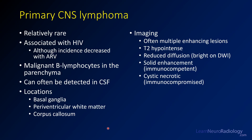This is a malignant B lymphocyte lymphoma that most often involves the brain parenchyma. It can often be detected in the CSF if you do a lumbar puncture. The most common locations are the basal ganglia, the periventricular white matter, and the corpus callosum. It is one of two lesions which can cross the corpus callosum, the other being glioblastoma.